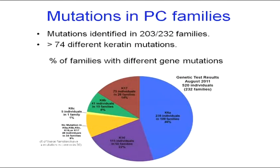This schematic diagram shows all the mutations we've identified in PC families registered with PC Project. We now have more than 75 different keratin mutations. Nearly 50% of the mutations are found in keratin 6A, about a quarter in keratin 16, a bit less than a quarter in keratin 17, and about an eighth in keratin 6B. For keratin 6C we only have one family registered with PC Project — the other three families aren't currently registered. We have a number of families in which we still haven't been able to find a mutation, and some of these look slightly different clinically from typical PC. This trend of almost half the mutations in K6A and about a quarter each in 16 and 17 seems fairly consistent as we increase the number of families.